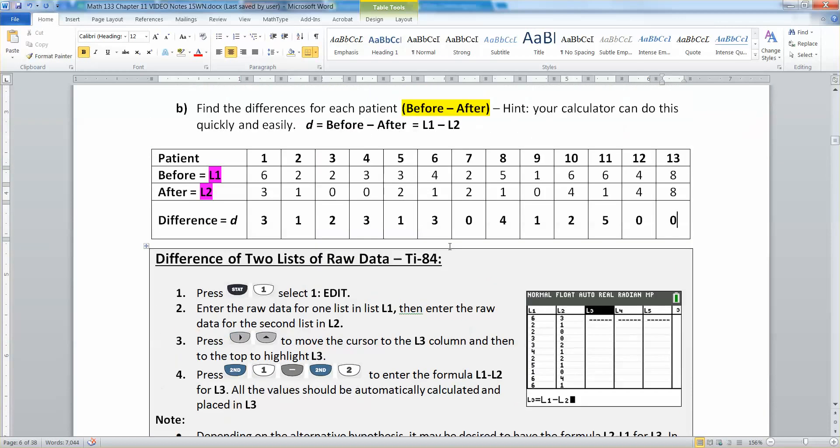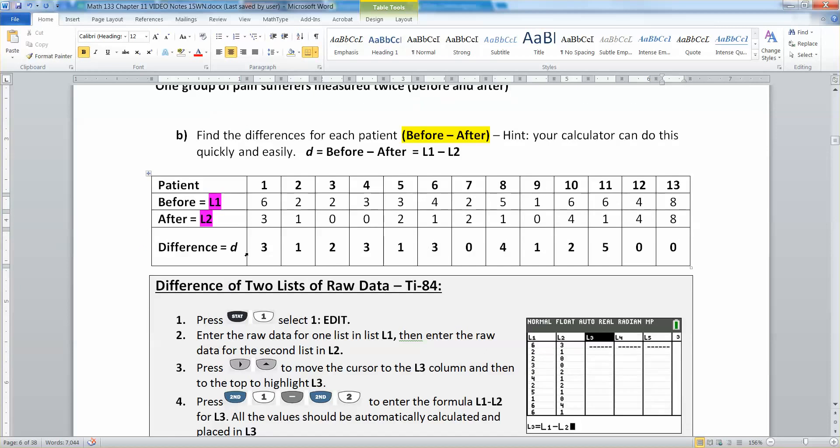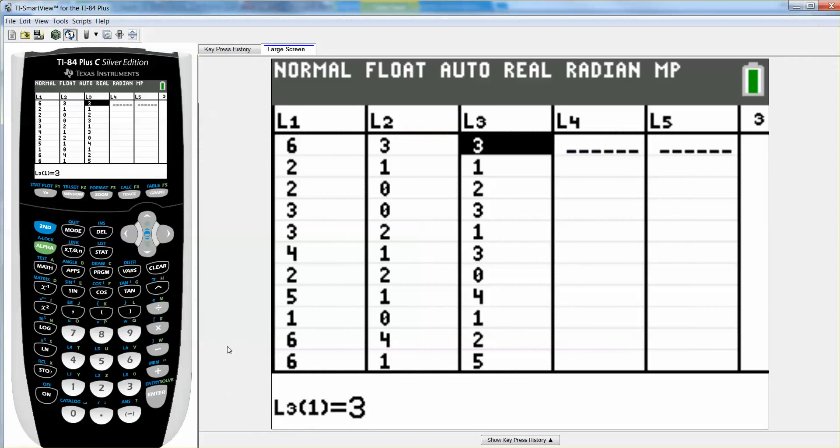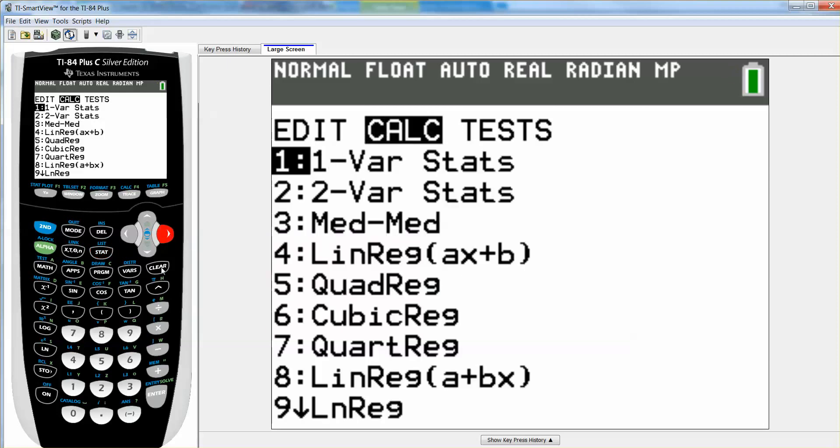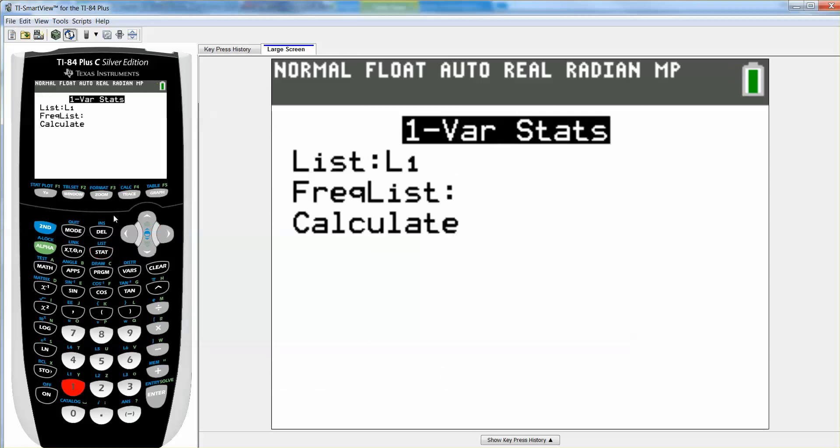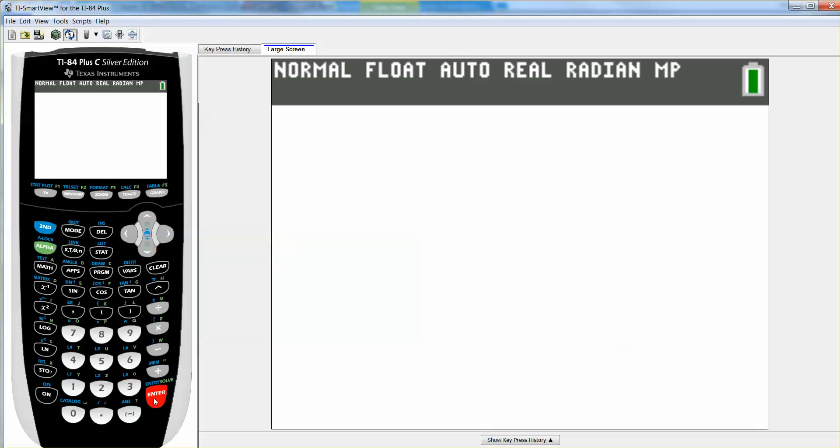Now we need to find the standard deviation and the mean for this data set. And that's one of the reasons we wanted to get the calculator to do this for us. Because once I have these in L3, to find the mean and the standard deviation, I will go to calculate, pick one variable stats, and I want to tell it L3 because that's where my differences are. So second three, leave the frequency list blank, and go down to calculate, and press enter.